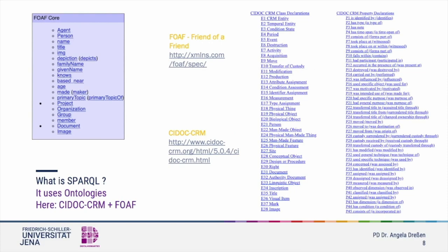The semantic web relies on ontologies and vocabularies. Two examples are FOAF, which stands for Friend of a Friend, and CIDOC-CRM, the Conceptual Reference Model. Both are widely used, and what you are seeing here is only a very small portion of their entries. FOAF is not as substantial as CIDOC-CRM, and you will find the most used categories in a FOAF ontology entry, like person, primary, topic and image.